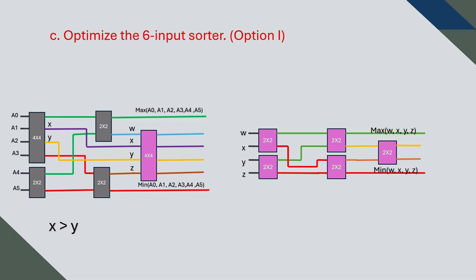Although we cannot be certain which of the two values w or z is larger since they come from separate paths, we do know that x is definitely greater than y based on how the sorter is structured. Let's now try to redesign the four-on-four sorter assuming this known relationship x is larger than y.